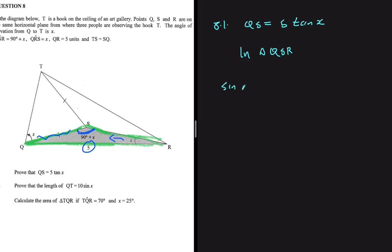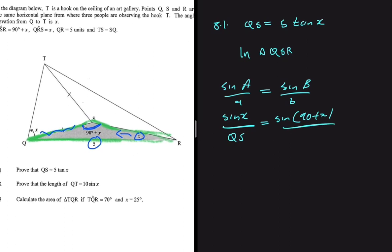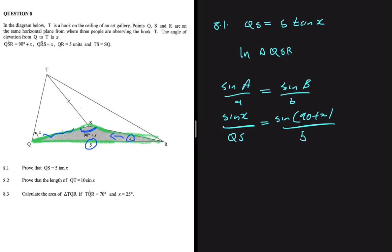The sine rule states that sin(A) divided by its opposite side equals sin(B) divided by its opposite side. In our triangle, sin(x) divided by QS equals sin(90 + x) divided by QR, where QR equals 5.